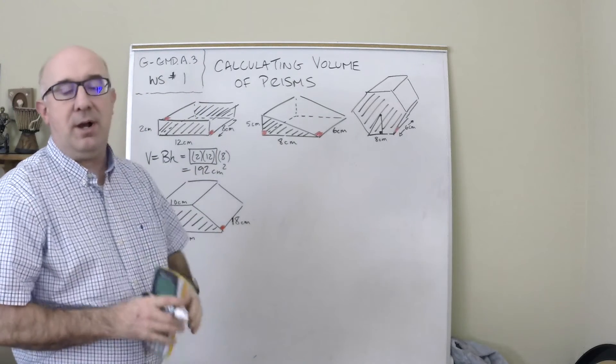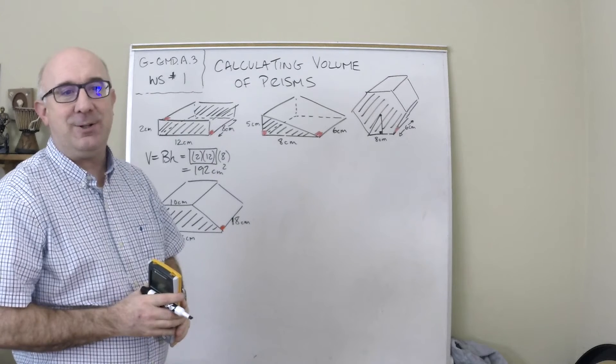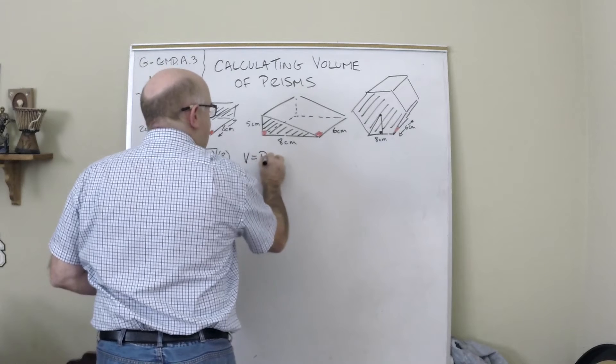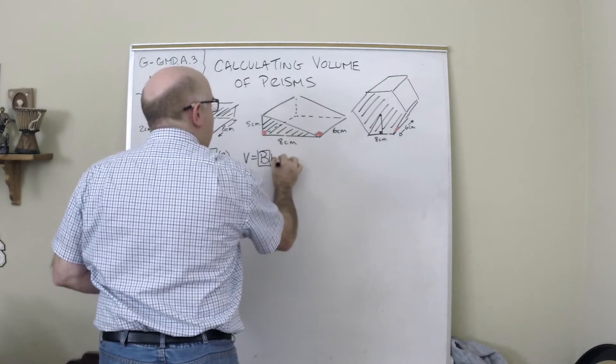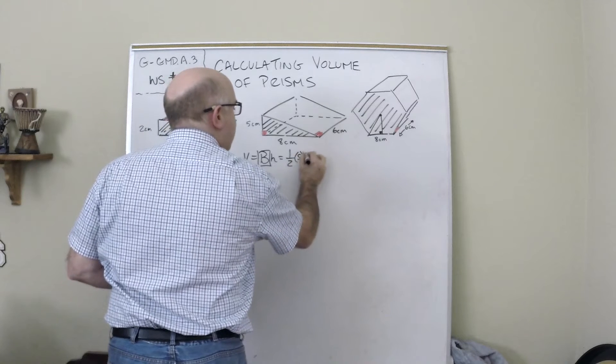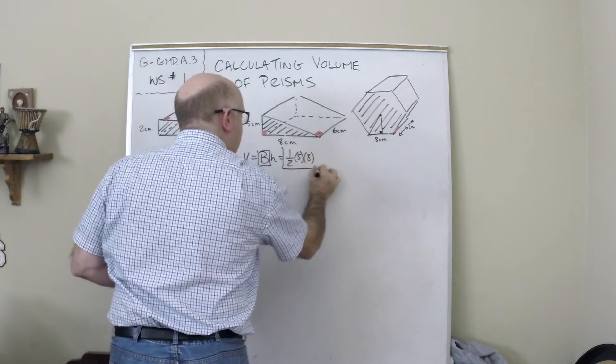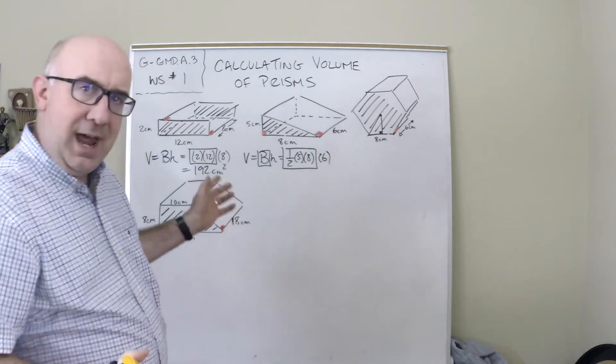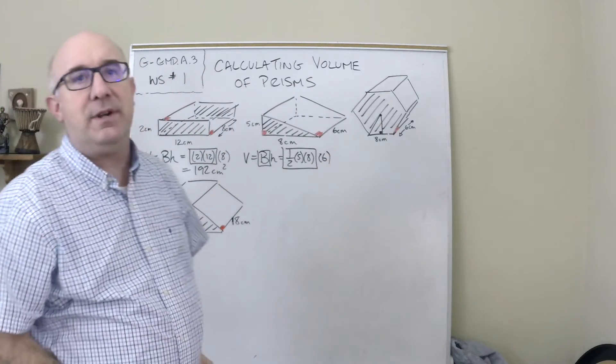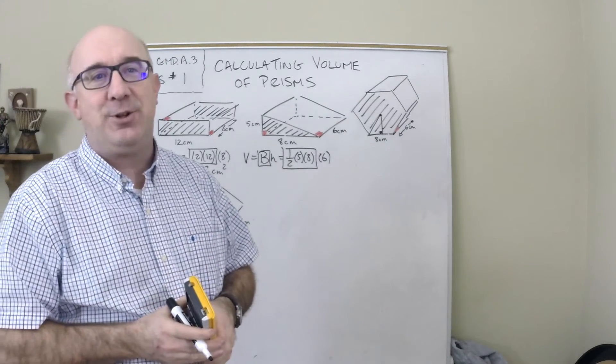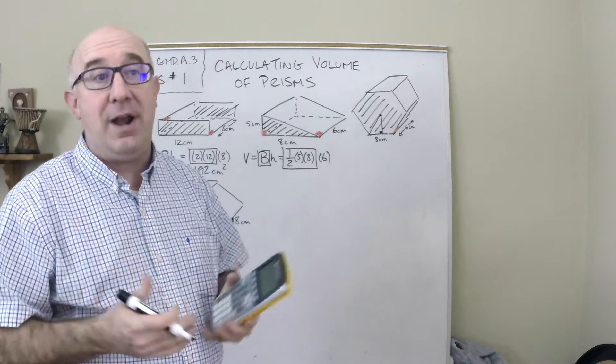When we go to our guy here, the triangular prism, we want to find the area of one base again. And so in this case, it's one half, 5 times 8. Again, I'm going to put a box around that. You might say, whoa, there's a half there. How come there wasn't a half over here? Because our base in this case is triangular. So it needs the triangle's formula for area.